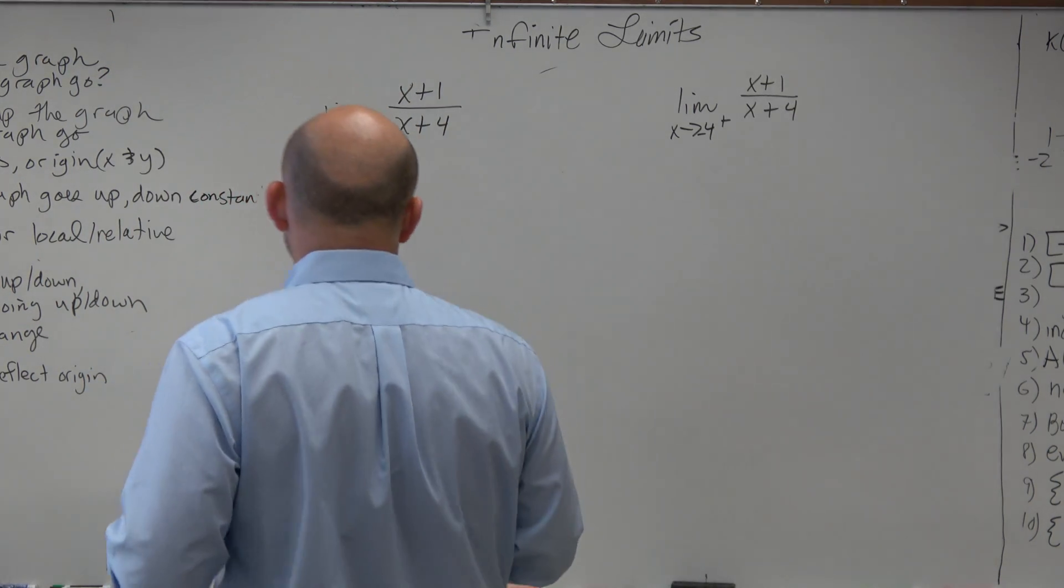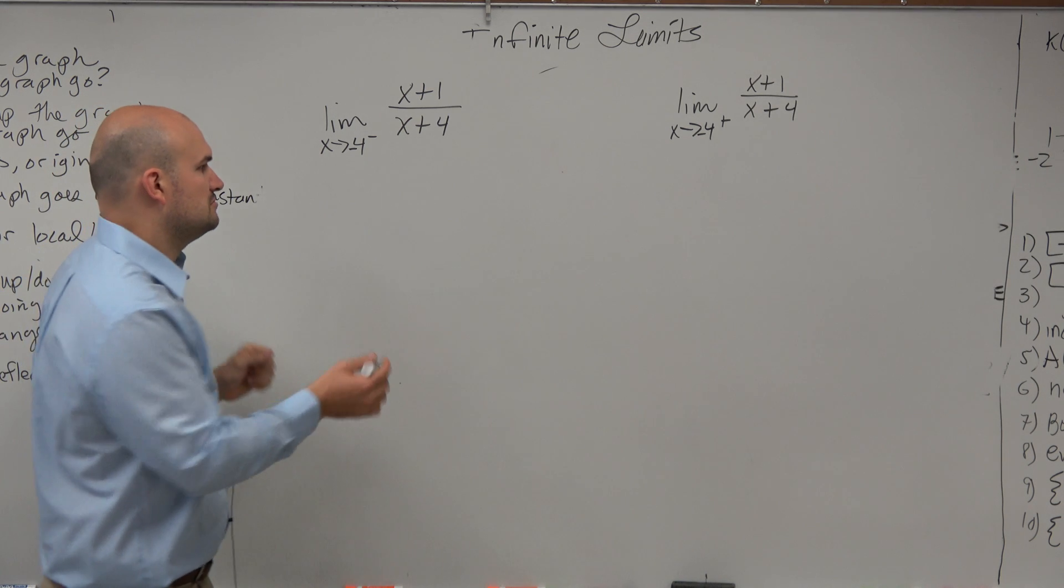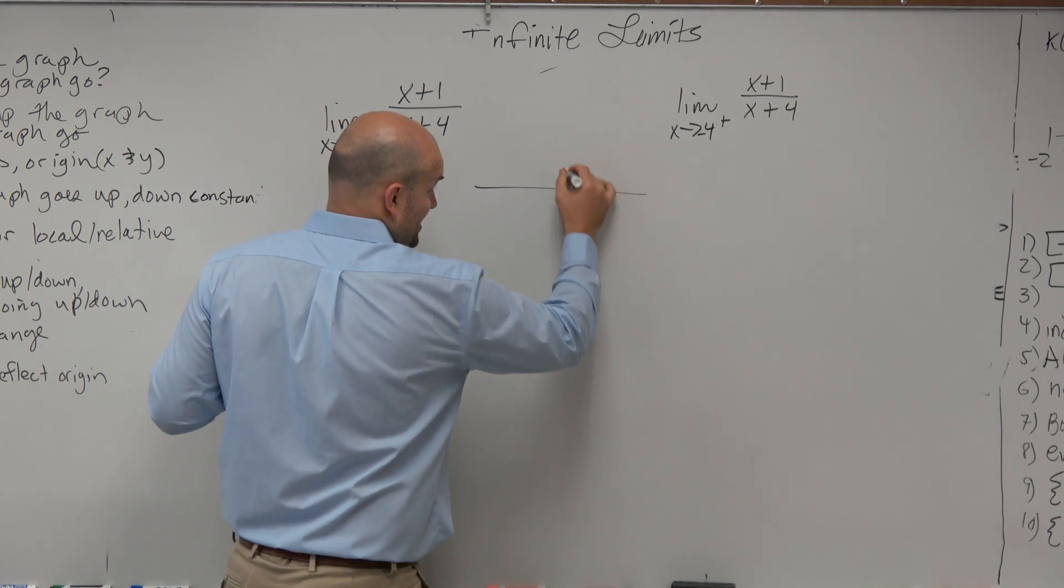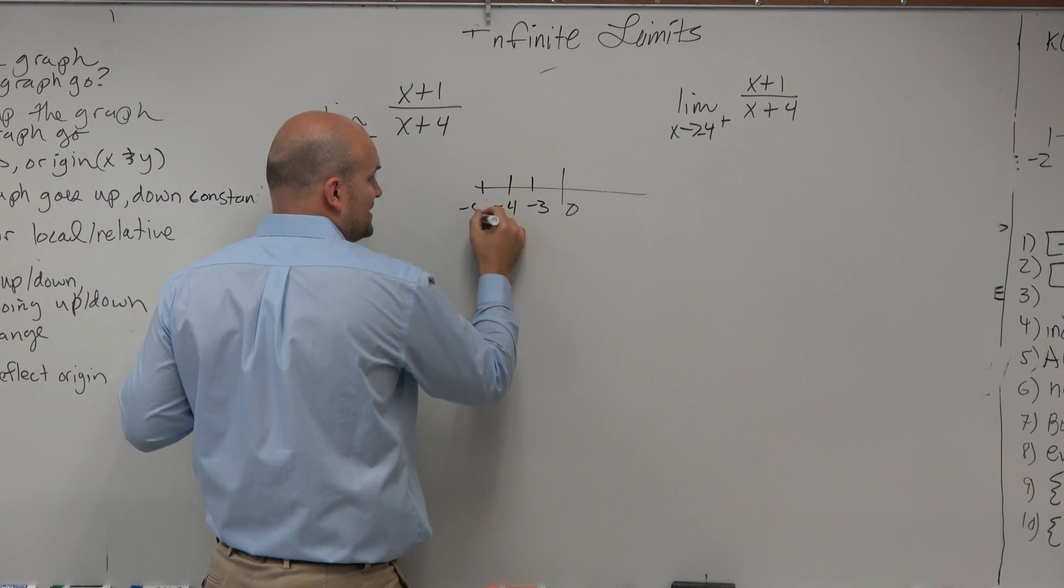When we're evaluating from the left-hand side, what is a number that's really close to negative 4, but from the left? So let's look at the number line system. Here's 0, here's negative 4, that would be negative 3, this would be negative 5.